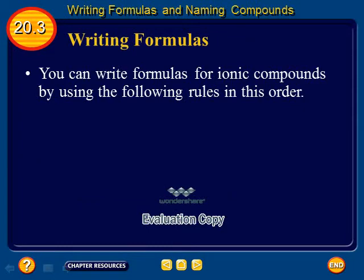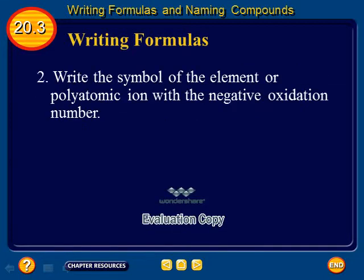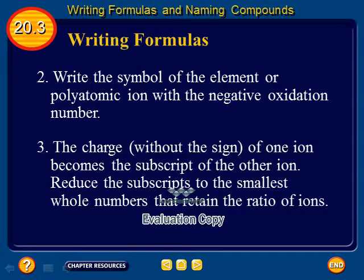You can write formulas for ionic compounds by using the following rules in this order. Number 1: Write the symbol of the element or polyatomic ion — ions containing more than one atom — that has the positive oxidation number or charge. Number 2: Write the symbol of the element or polyatomic ion with a negative oxidation number. Number 3: The charge without the sign of one ion becomes a subscript of the other ion. Reduce the subscripts to the smallest whole numbers that retain the ratio of ions.